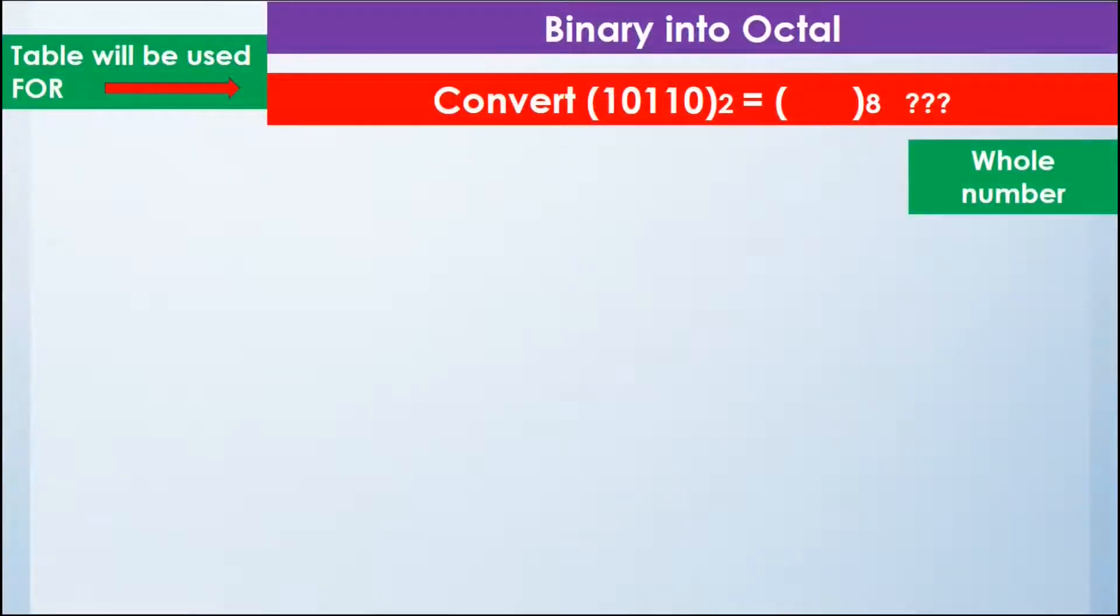Now we look at an example in which we are going to convert a binary number into an octal number. In this example we are going to use a whole number.